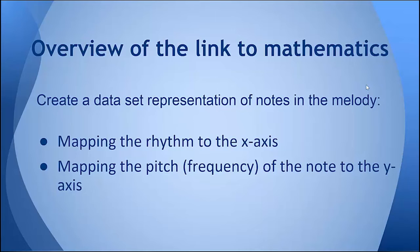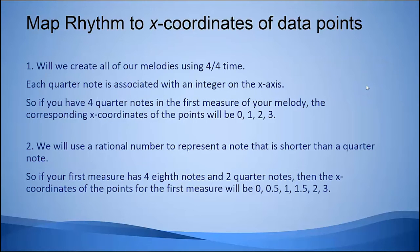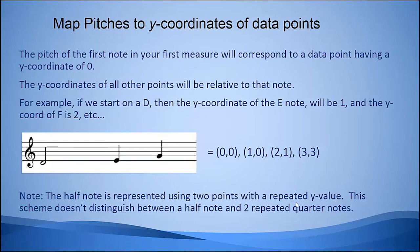We're going to map the rhythm or the timing of the notes to the x-axis, and we're going to match the pitch or the frequency of the note to the y-axis. In this scheme, we'll create all of our melodies using 4/4 time, so each quarter note is associated with an integer on the x-axis. If you have 4 quarter notes in a measure, the corresponding x-coordinates of the points will be 0, 1, 2, and 3. We'll use rational numbers to represent a note that's shorter than a quarter note. So if your first measure has 4 eighth notes and 2 quarter notes, then the x-coordinates of the points for the first measure will be 0, 0.5, 1, 1.5, 2, and 3. The pitch will be associated with the y-coordinate of the data points, and the very first note will define what our horizontal 0 is.